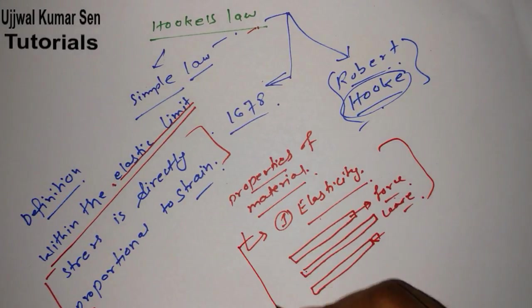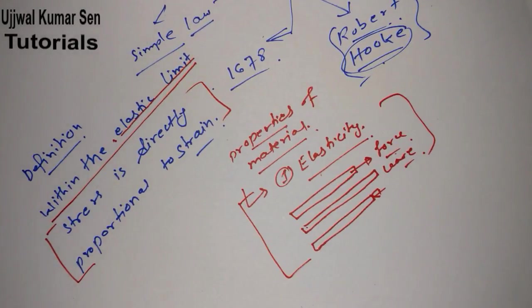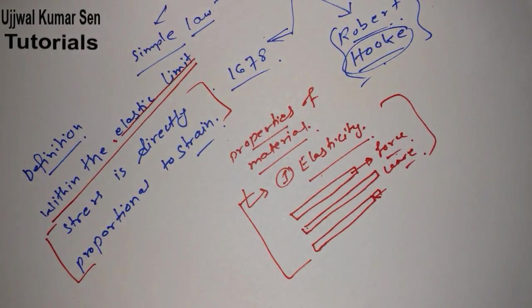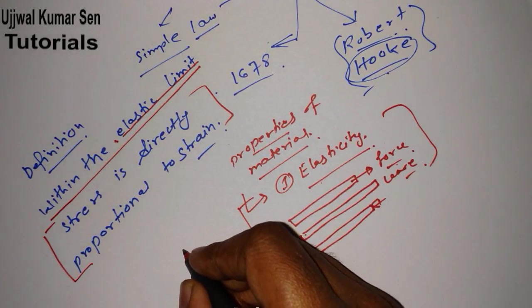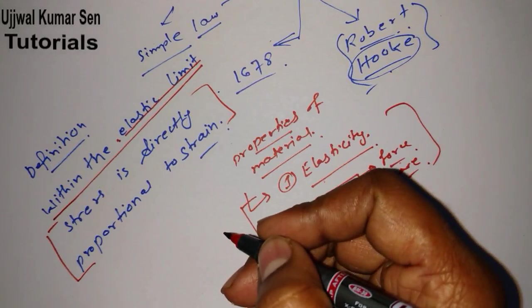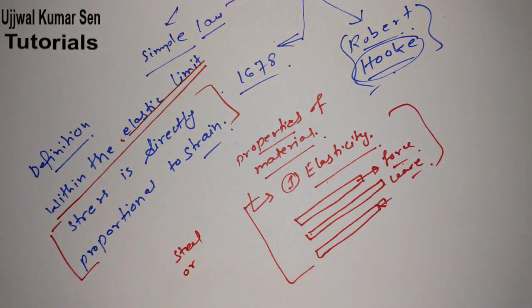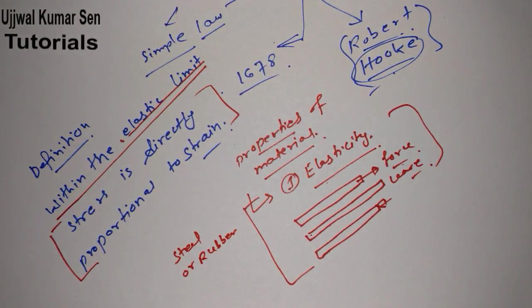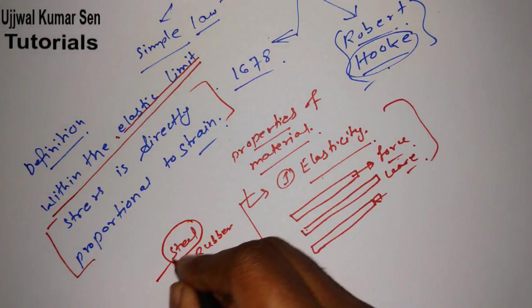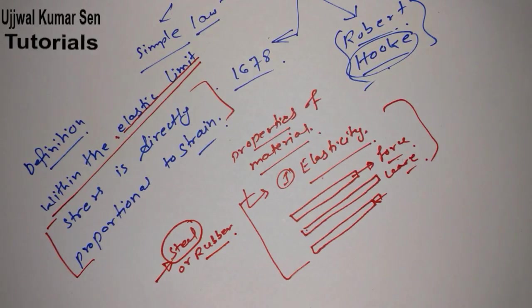Here is an interesting question that has been asked in many examinations: which one has more elasticity — steel or rubber? You might guess rubber, but the answer is steel. Steel is more elastic than rubber, meaning steel has more elasticity property than rubber.